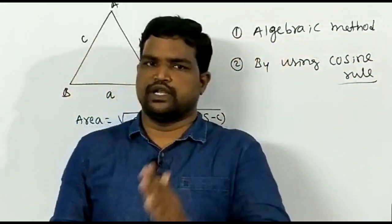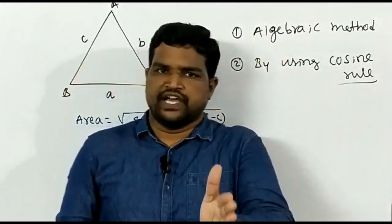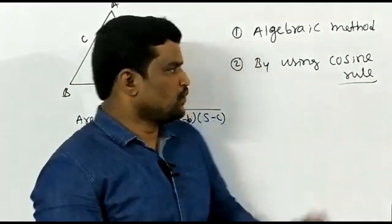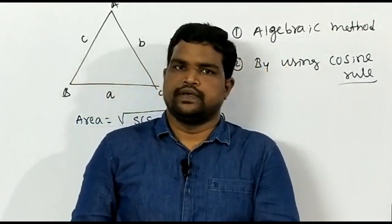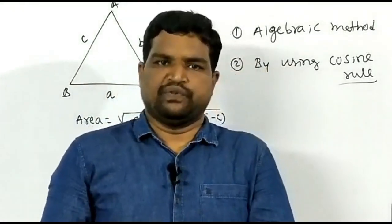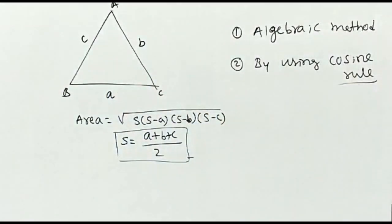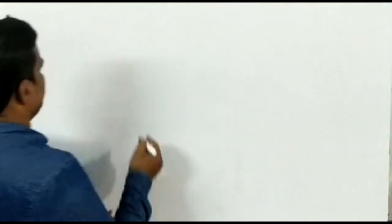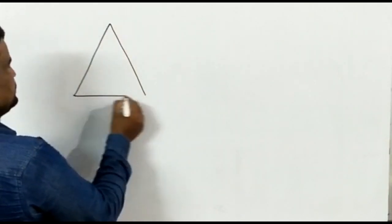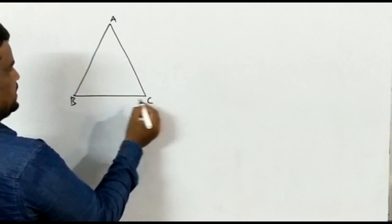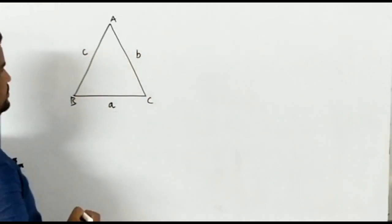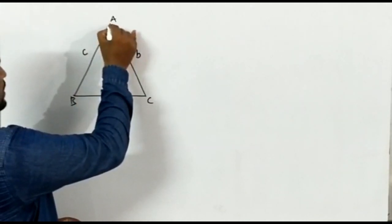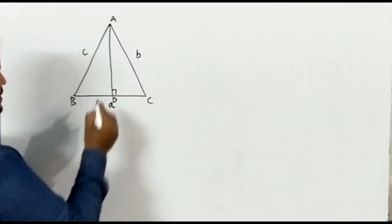In the first method, we use Pythagoras' theorem to derive Heron's formula. In the second method, we use trigonometric identities to derive Heron's formula. Let us derive them one by one. For the first method — algebraic method using Pythagoras' theorem — consider triangle ABC with sides A, B, and C respectively. Draw a perpendicular AD on BC and let it be H.